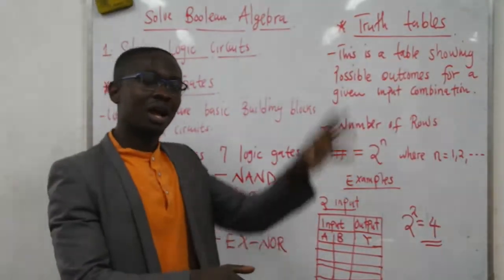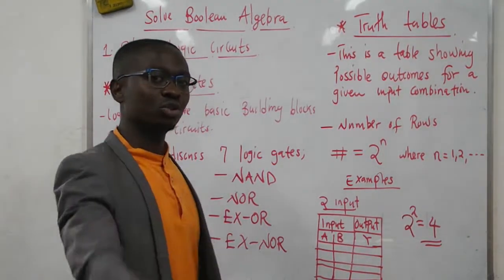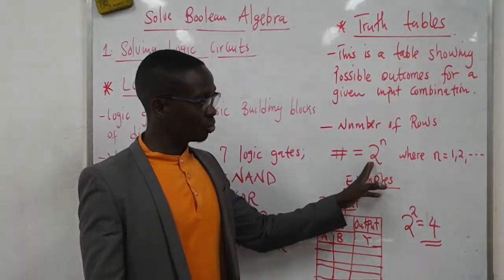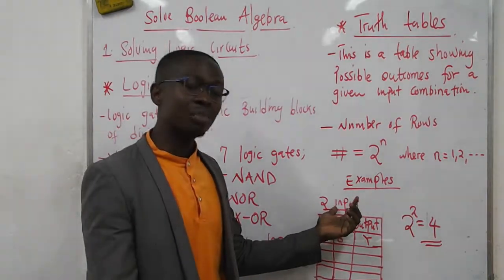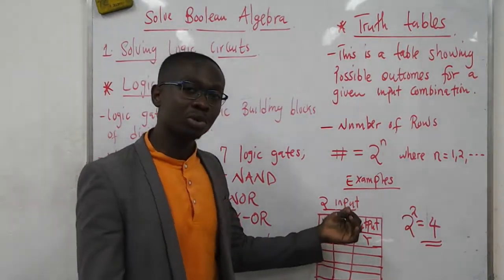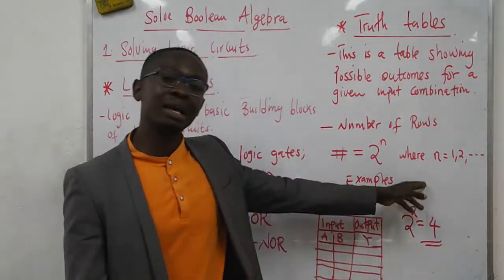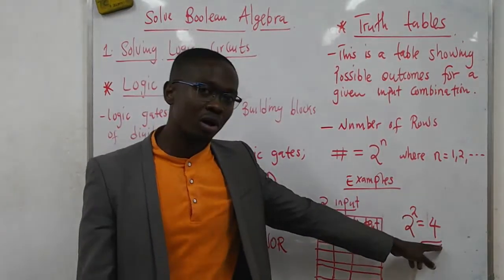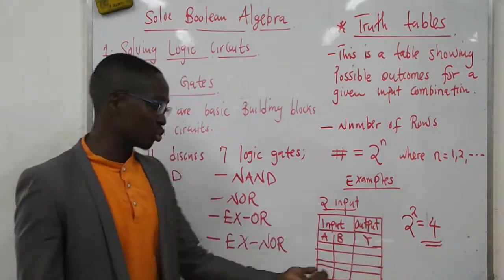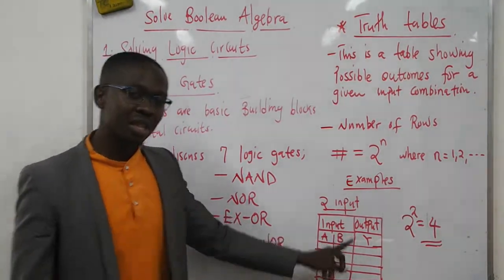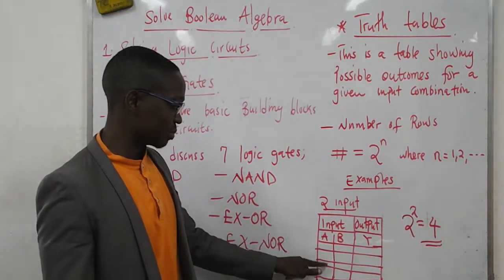You need to know how many combinations of inputs there are, and therefore how many rows will be in the table. The number of rows is given by 2 to the power N, where N is the number of inputs. For example, for two-input gates, the number of rows is 2 to the power 2, which equals 4. So with inputs A and B, there are 4 possible combinations.